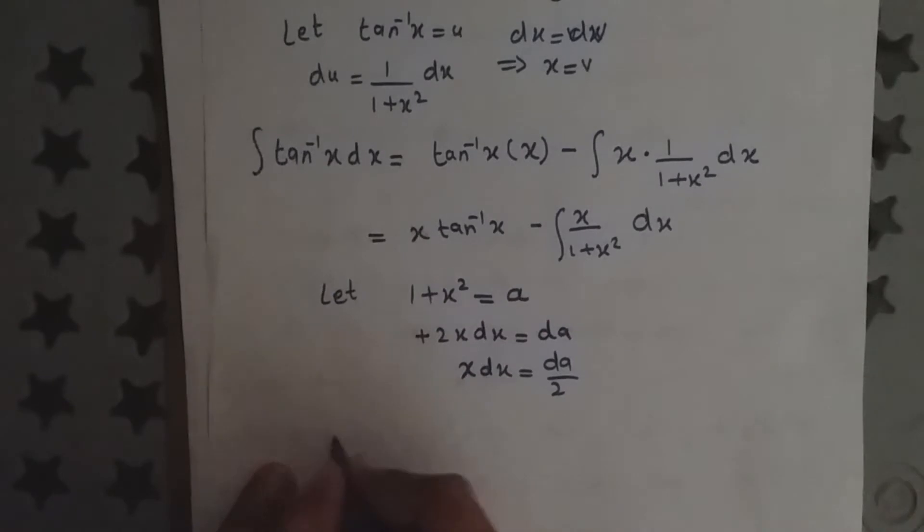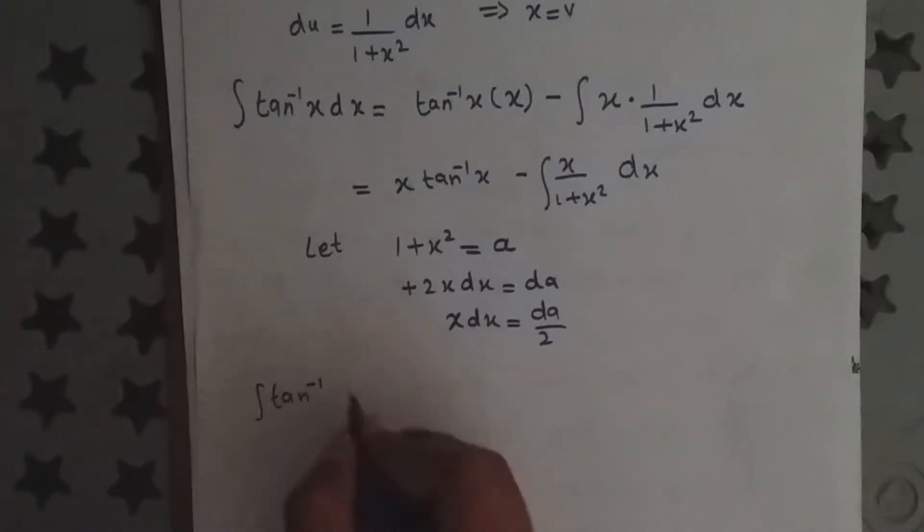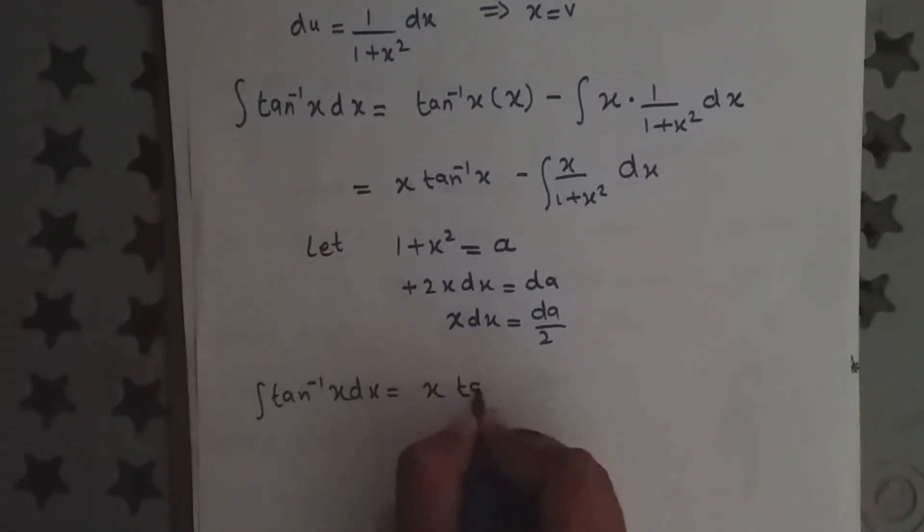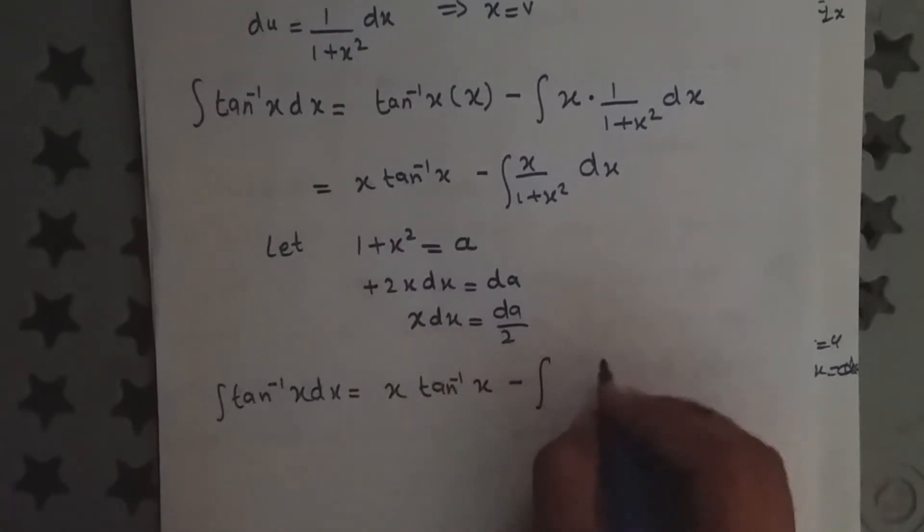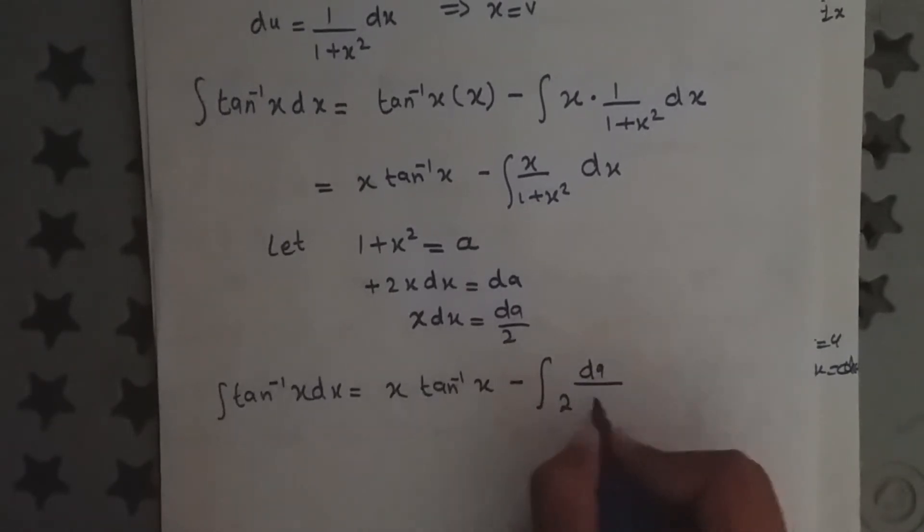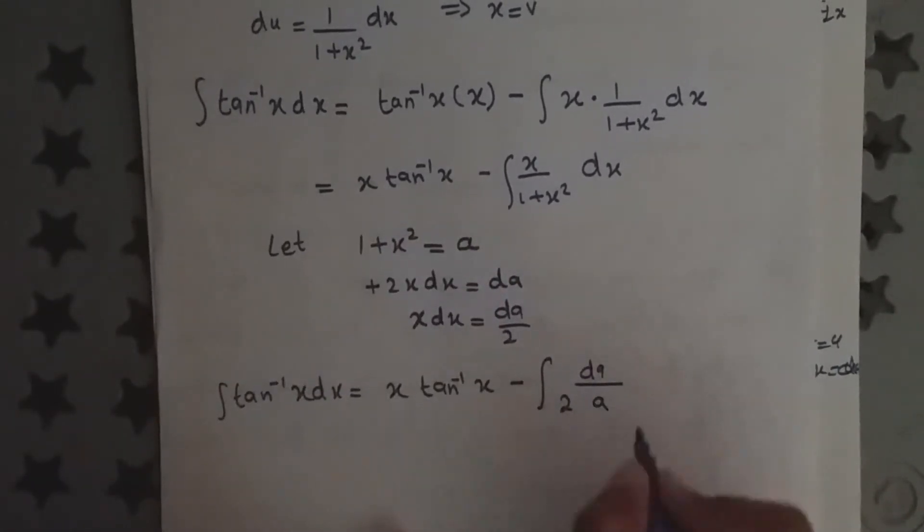So this term becomes minus integral of dA by 2a, where a equals 1 plus x square.